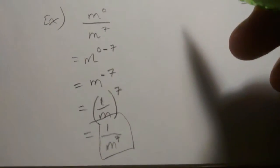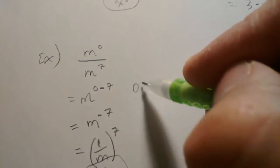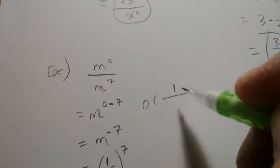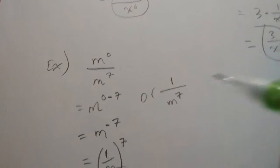1 over m to the 7th is our answer. Or you could have recognized, hey, m to the 0 power is 1, and said, that's 1 over m to the 7th. No work to be done there.